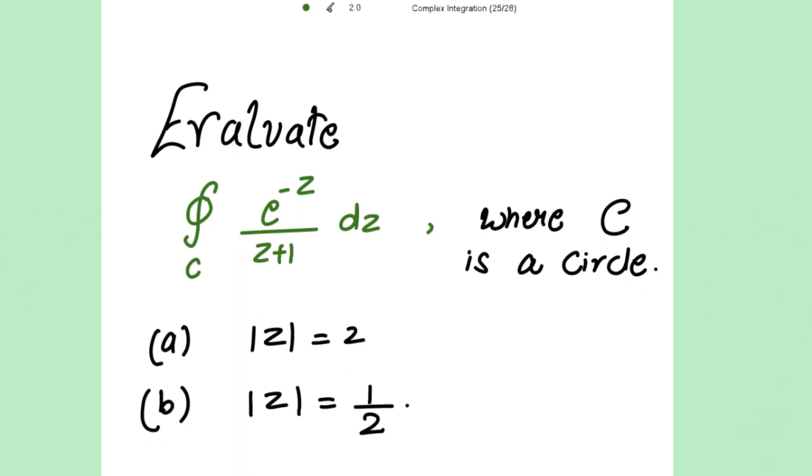Evaluate the closed integral of e to the power minus z over z plus 1 dz, where C is a circle. Part (a): mod z equals 2. The first region is given to us as a circle having radius 2, and the second region is mod z equal to 1 by 2.